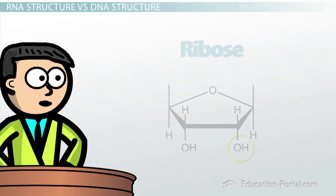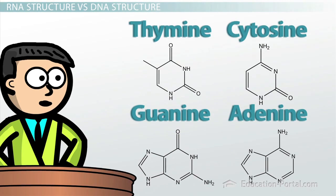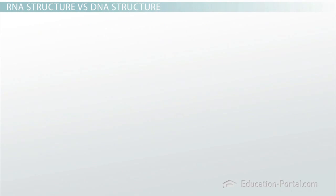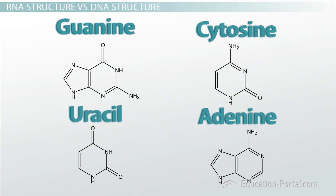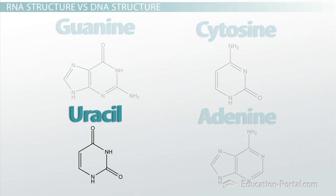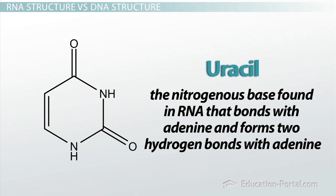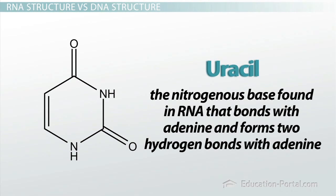Second, there are four different nitrogenous bases found in DNA and RNA. However, there is one difference. The bases found in DNA are guanine, cytosine, adenine, and thymine. The bases found in RNA are guanine, cytosine, adenine, and uracil. Uracil forms two hydrogen bonds with adenine and functions just like thymine does. It's simply used in RNA instead of thymine.